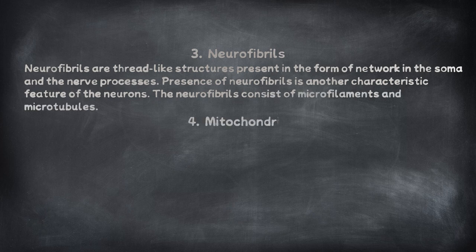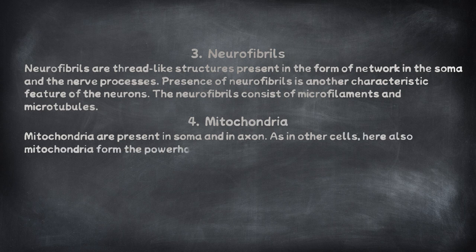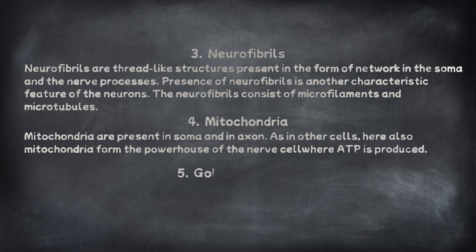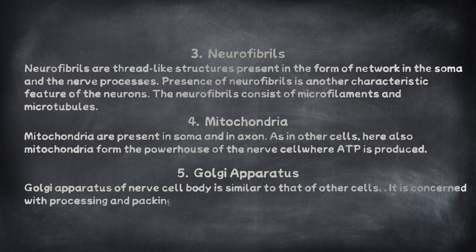Mitochondria are present in both soma and axon. As in other cells, mitochondria form the powerhouse of the nerve cell, where ATP is produced. The Golgi apparatus of the nerve cell body is similar to that of other cells, and is concerned with processing and packing of proteins into granules.